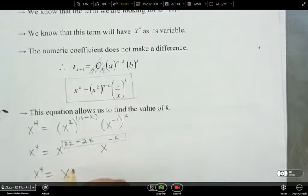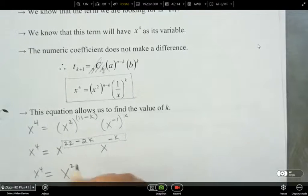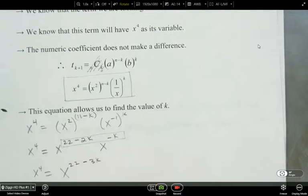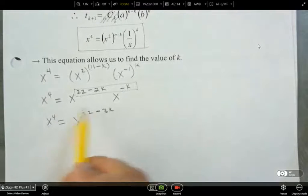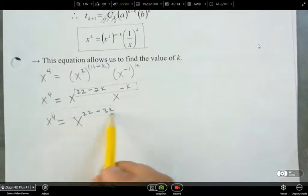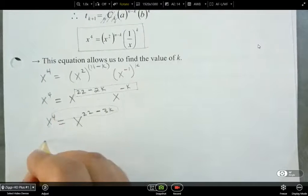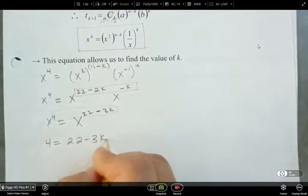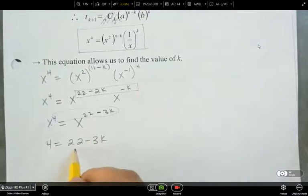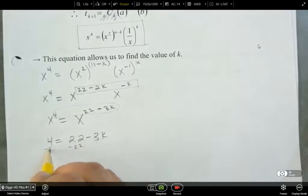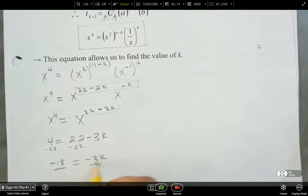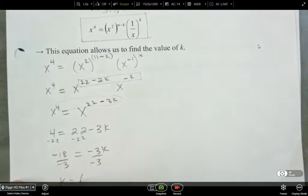And the whole time, I need to be thinking, this has to be equal to x to the power of 4. Now I can solve the exponents since they are both to the base x. Drop the base. And then solve for k. So minus 22, minus 18, minus 3k, divide both sides by negative 3, and we get k is equal to 6.